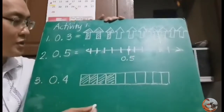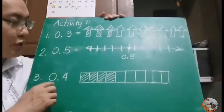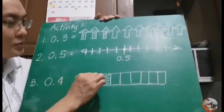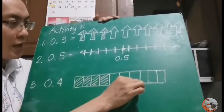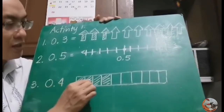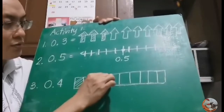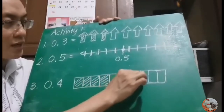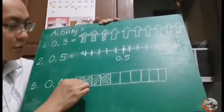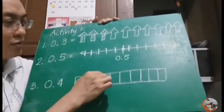How do you visualize 4 tenths using a grid? Draw a grid and divide it into 10 parts: 1, 2, 3, 4, 5, 6, 7, 8, 9, 10. And then shade 4 parts: 1, 2, 3, 4. That represents 4 tenths.